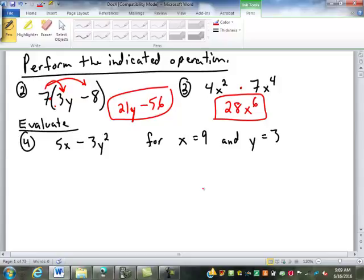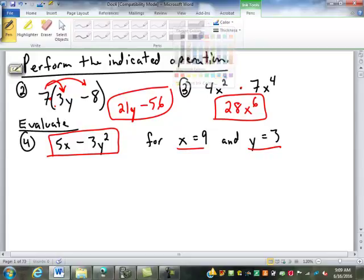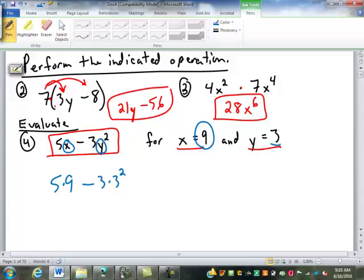And then finally down here, we have evaluate. So I'm giving you the expression 5x minus 3y squared. And evaluate it for x equals 9 and y equals 3. What are we going to do first? We have to replace the x with 9, right? So that's 5x becomes 5 times 9. Minus. Perfect. Well, 3 times 3 squared, right? We replace the y with 3. So 3 times y squared becomes 3 times 3 squared.